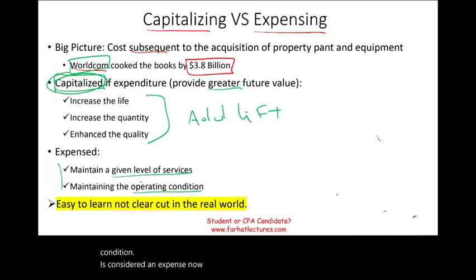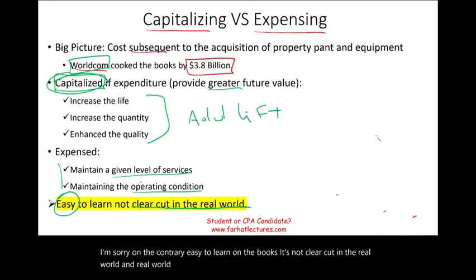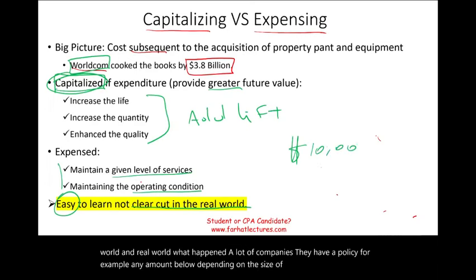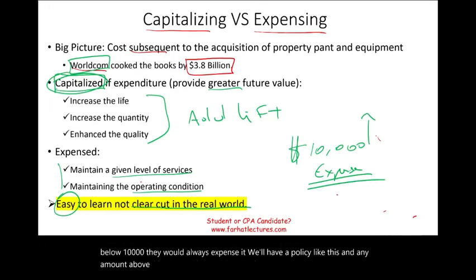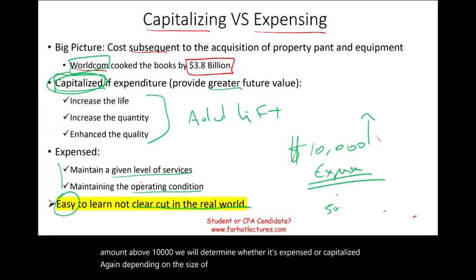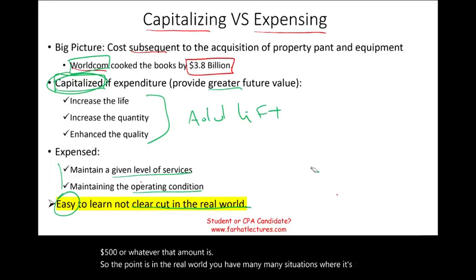This concept is easy to learn on the books, but it's not clear cut in the real world. In the real world, a lot of companies have a policy — for example, any amount below $10,000, depending on the size of the company, they will always expense it. Any amount above $10,000, they determine whether it's expensed or capitalized. The point is, in the real world, you have many situations where it's not clear cut.